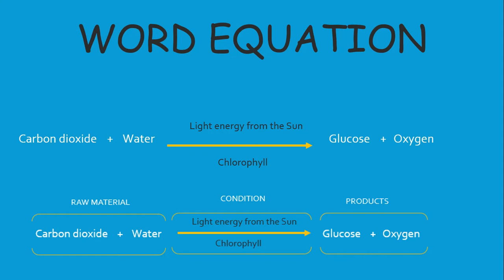The equation has three parts: raw material, which would have been the carbon dioxide and water; the condition lights and of course chlorophyll; and the product, which is of course glucose and oxygen.